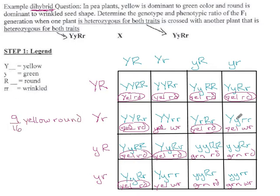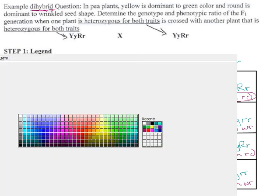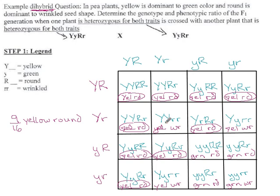What other combos have we got? Yellow and wrinkled, there's one of that, two yellow and wrinkled and three. Three sixteenths of the plants will be yellow but wrinkled.